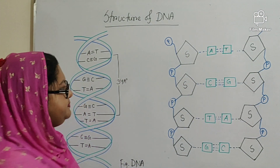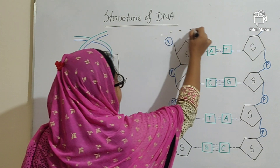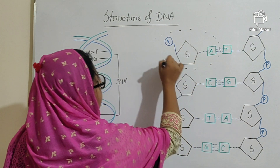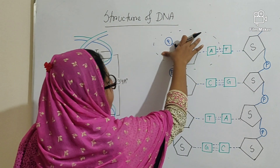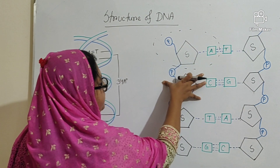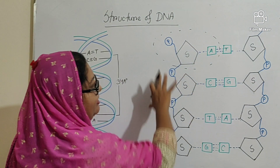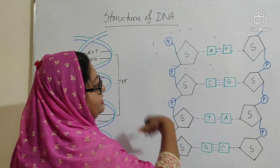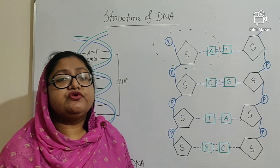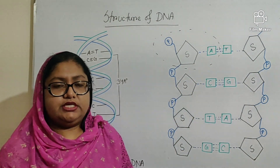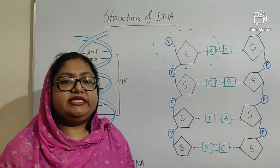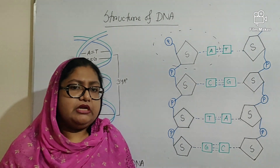You can see that in this structure, here is one nucleotide, here is another nucleotide, and another nucleotide. Thus, a DNA molecule comprises thousands of nucleotides. So we can say that the structure of DNA — DNA is a polynucleotide.